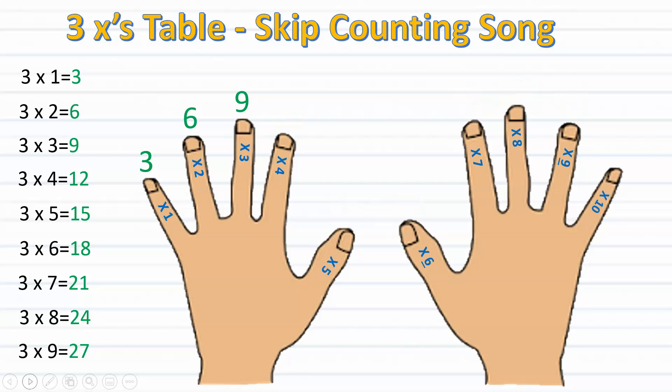Again three, six, nine, twelve, fifteen, eighteen, twenty-one, twenty-four, twenty-seven.